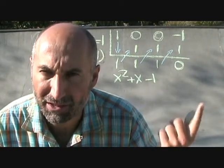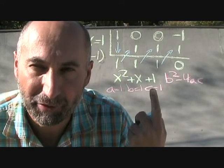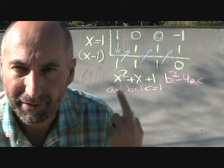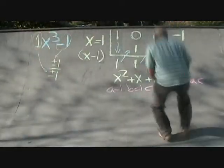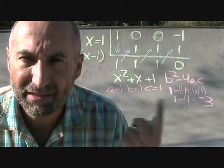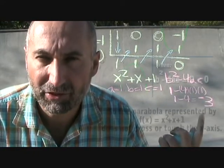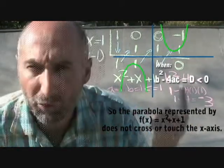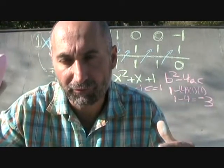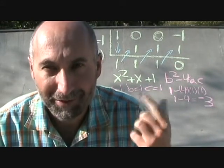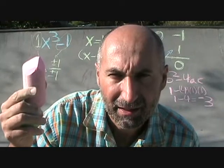A correction here: the polynomial should be x squared plus x plus 1, not minus 1. So a equals 1, b equals 1, and c equals 1. Substituting into the discriminant: 1 squared minus 4 times 1 times 1 equals 1 minus 4, which is negative 3. Since the discriminant is less than 0, this quadratic has no real roots — so we can't factor it further in the real number realm.